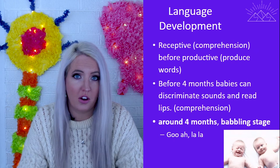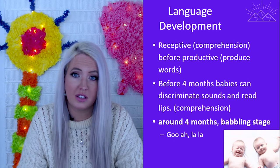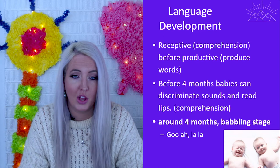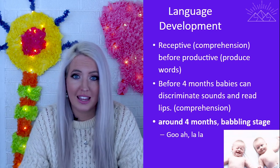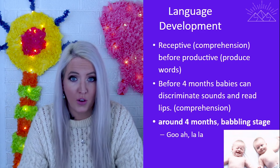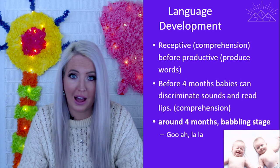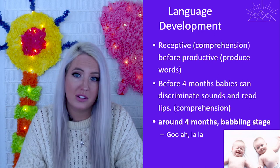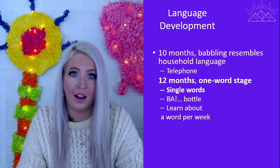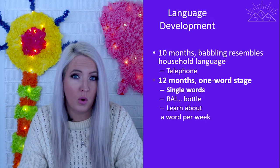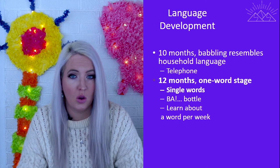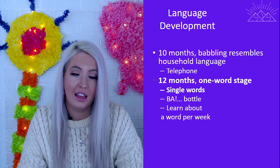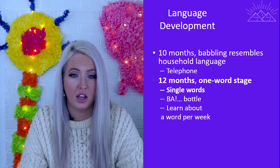As babies develop, starting around four months, we begin to see the start of language development. During this first stage, known as the babbling stage, babies are starting to understand the language being used around them and producing phonemes — those babbles of 'goo goo' or 'la la' — actually attempting to create the sounds used in their language. By about 10 months, this babbling starts to resemble more household language, and by around one year they reach the one-word stage, saying single words like 'ba,' 'bottle,' 'mama,' or 'dada.'